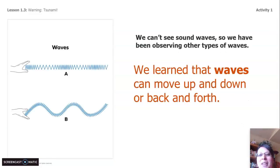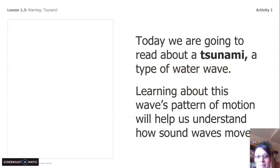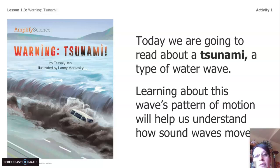We can't see sound waves, so we have been observing different types of waves. We know that waves can move up and down, and also back and forth. There are different kinds of waves. We also know that a wave is a pattern of motion and a wave begins at a source. Today we're going to read about a tsunami, which is a type of water wave. Learning about this wave's pattern of motion is going to help us understand how sound moves and how sound gets from the mother dolphin to her baby calf.